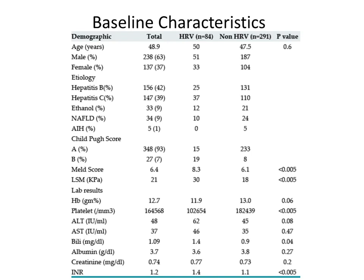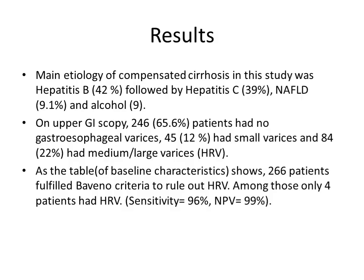Baseline characteristics of the cohort are summarized in this table, showing that patients from various etiologies were included — ethanol, non-alcoholic fatty liver disease, and viral hepatitis-induced chronic liver disease. The main etiology of compensated cirrhosis in this study was hepatitis B, followed by hepatitis C, non-alcoholic fatty liver disease, and alcohol.